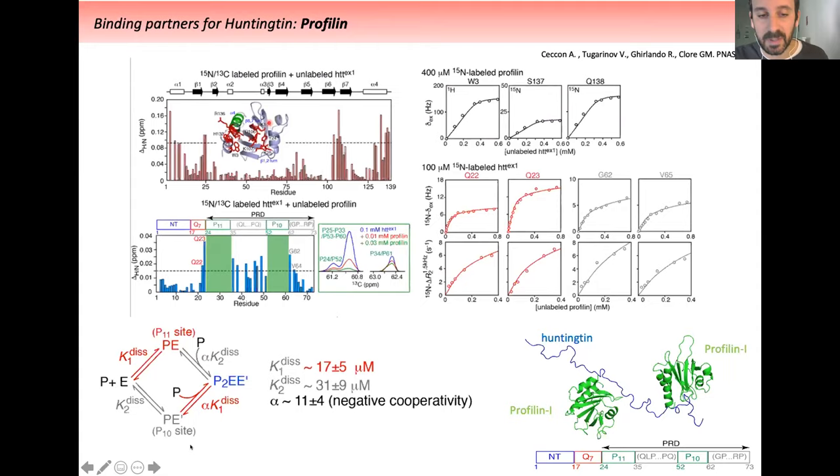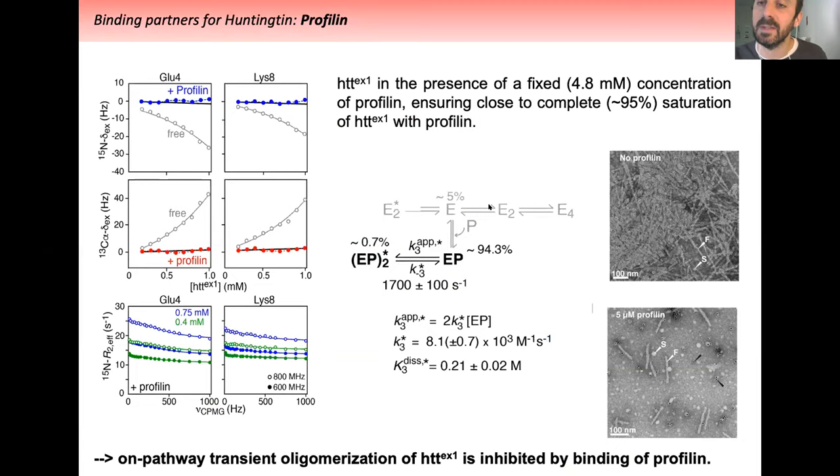We also observed shifts for residues adjacent to those regions, meaning profilin can bind to both tracts. This is the model that explains the binding. We characterized the affinities using simple titration experiments where either profilin or exon 1 was saturated. By fitting everything together according to this model, we established KDs in the range of micromolar. Interestingly, we can have two profilins bound on huntingtin, but with extremely negative cooperativity.